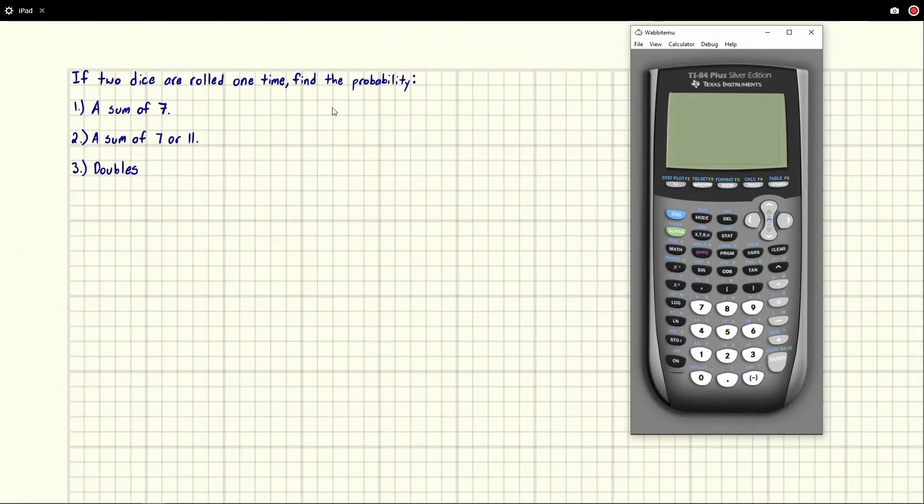Eric Burgess here. If two dice are rolled one time, find the probability first that it's a sum of seven, second that it's a sum of seven or eleven, and third that it's doubles.